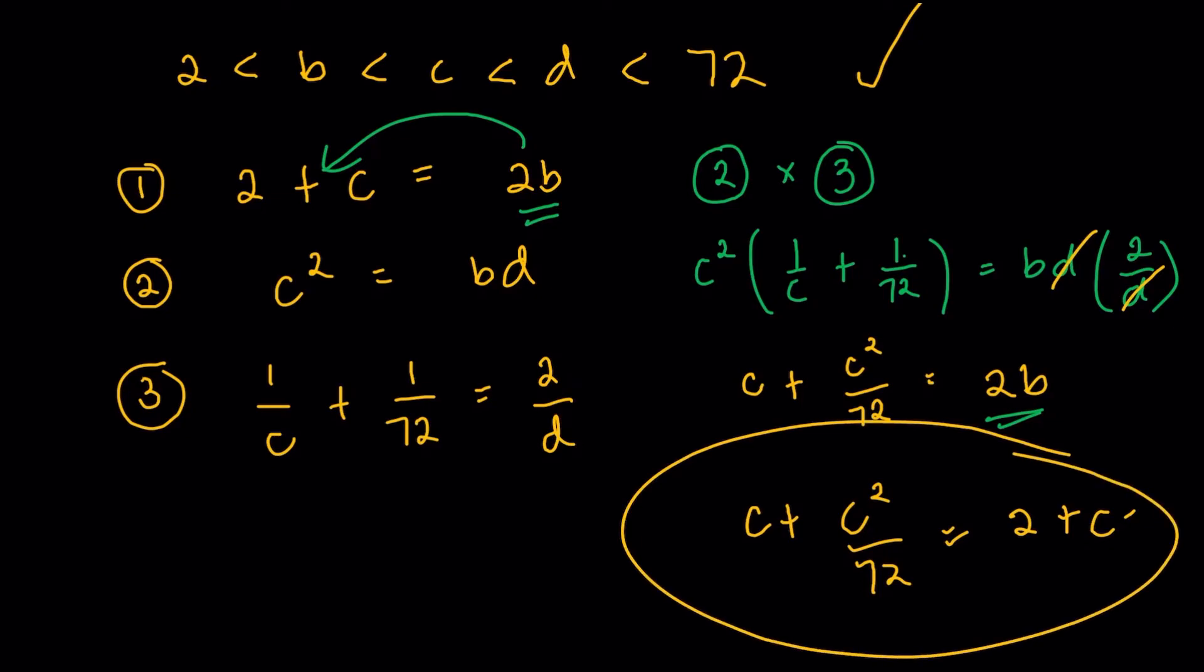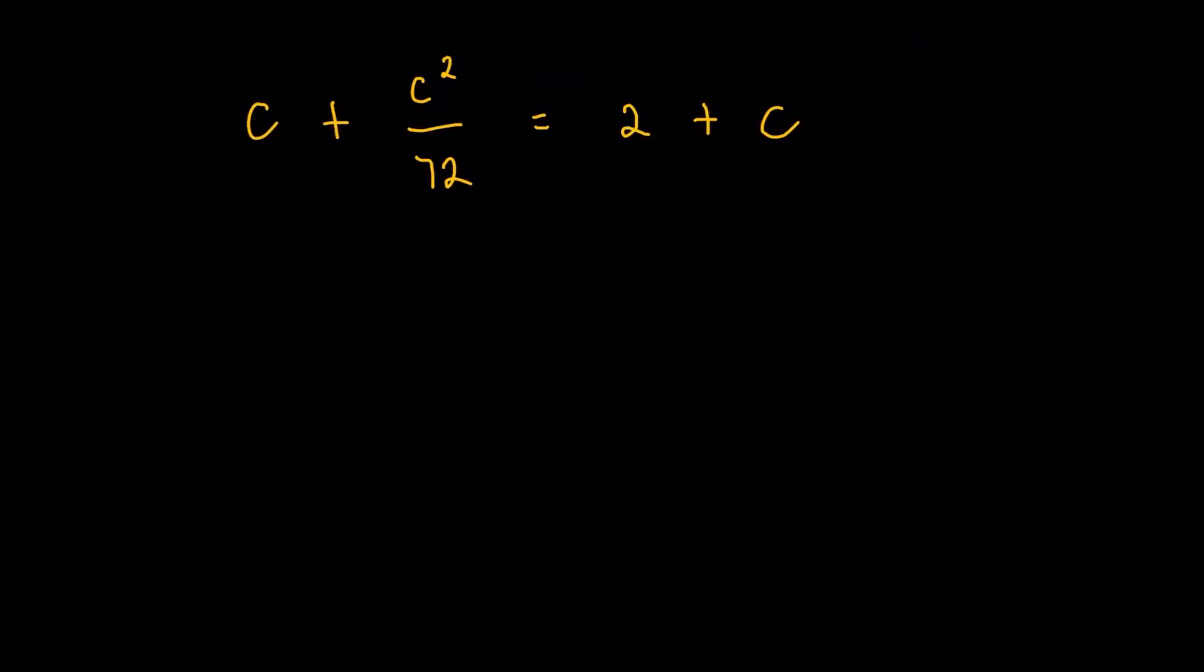And this is now simply an equation in C. I could solve for C in this equation. Cancel out the C here, okay, and then multiply both sides by 2... sorry, multiply both sides by 72. Apologies for that. C squared would be 144. So C would either be 12 or negative 12.